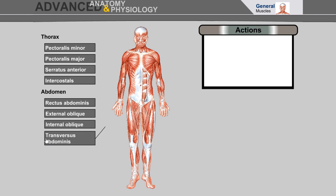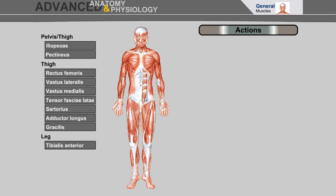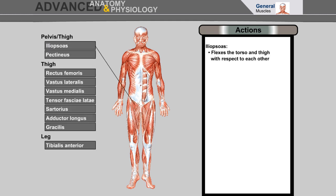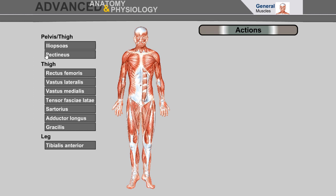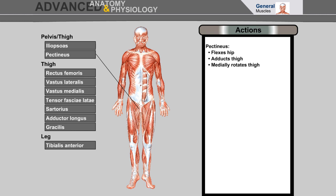Transversus abdominis supports the abdominal wall, aids forced expiration, and raises intra-abdominal pressure; it is deep and cannot be seen. Iliopsoas flexes the torso and thigh with respect to each other, flexes the hip, adducts the thigh, and medially rotates the thigh.